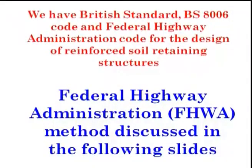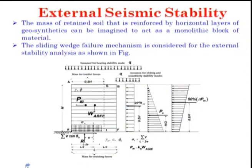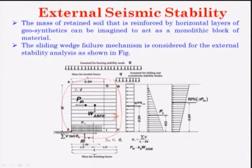We will discuss in this class design methods by means of the Federal Highway Administration, whatever they have given step by step. The first one is external seismic stability. The mass of retaining soil that is reinforced by horizontal layers should be considered as a monolithic block — that means soil plus reinforcing material as one unit.